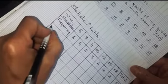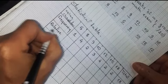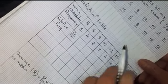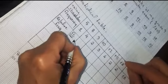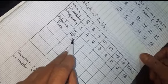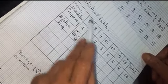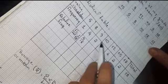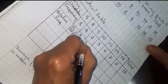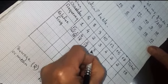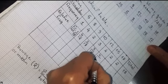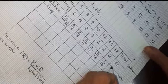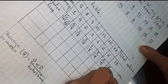After frequency, let's calculate the relative frequency. Relative frequency is frequency over total frequency. For value 5: 1 over 18. For 8: 4 over 18. For 9: 2 over 18. For 10: 3 over 18. For 12: 4 over 18. For 15: 2 over 18. For 18: 2 over 18. The total relative frequency must be 1, which is 18 over 18.